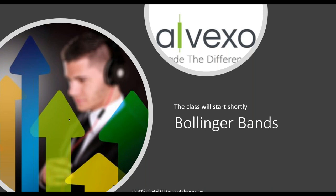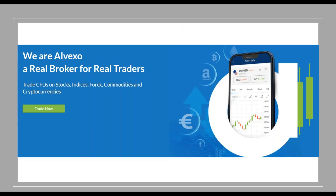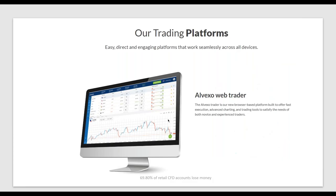Good evening, ladies and gentlemen, and welcome to our webinar tonight brought to you by Alvexo, one of the world's leading providers of CFD and Forex trading. Tonight we're going to be learning all about Bollinger Bands, one of the great indicators to use for trading CFDs. When you trade with Alvexo, you can trade CFDs on stocks, indices, Forex, commodities, and cryptocurrencies, because Alvexo is a real broker for real traders.